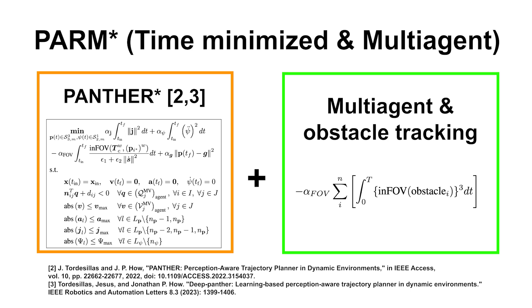We first introduced PARMSTAR, which is based on our previous work, PantherSTAR, a perception-aware single-agent planner with time minimization. To extend it to multi-agent systems, we modified the objective function so that it can avoid and track multiple obstacles and agents.